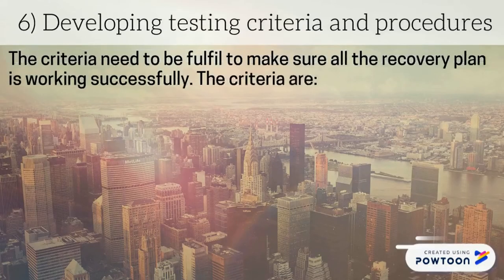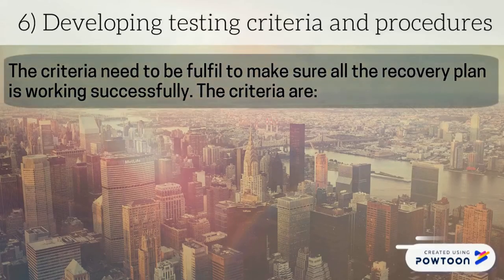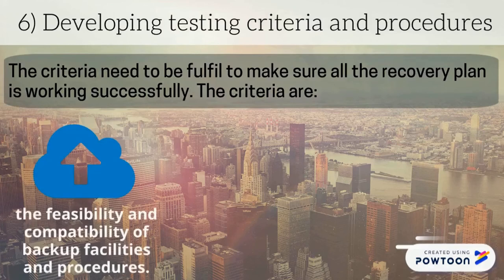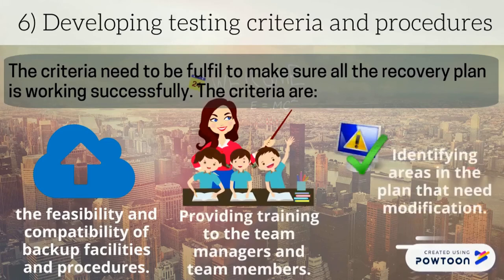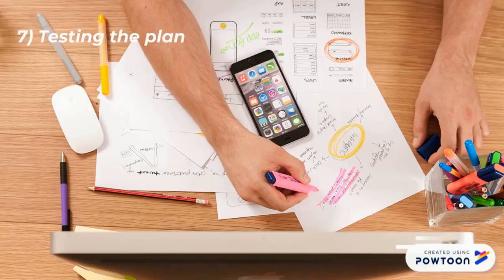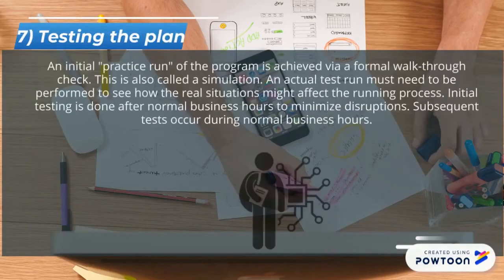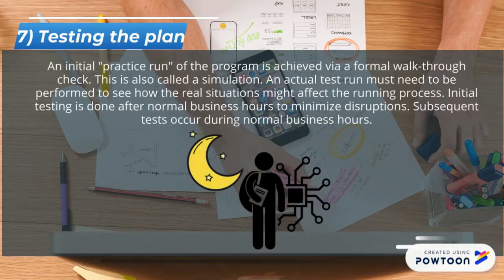The criteria to ensure all recovery plans are working successfully include: determining the feasibility and compatibility of backup facilities and procedures, providing training to team managers and members, identifying areas in the plan that need modification, and testing the plan. An actual test run must be performed to see how real situations might affect the running process. Initial testing is done after normal business hours to minimize disruptions, and subsequent tests occur during normal business hours.